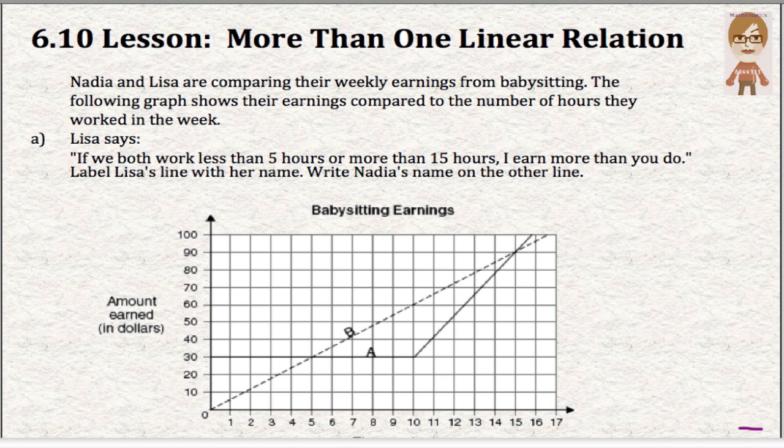So what Lisa said, if we work less than five hours, I earn more than you do. So when you look at five hours down here, if she works less than five hours, I earn more than you do. So this actually tells us a lot. When we look at these two lines, here's a solid line up here and a dotted line down below.